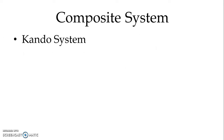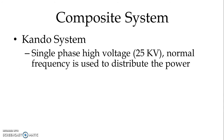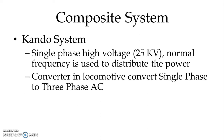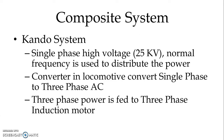In the Kundo system, single phase high voltage — as high as 25 kV — at normal frequency is used to distribute power. A converter in the locomotive converts single phase to three phase AC supply, and the three phase power is then fed to a three phase induction motor, which is simple and robust in construction. Although it has disadvantages like low starting torque and high starting current, by using electronic converters these disadvantages can be overcome.